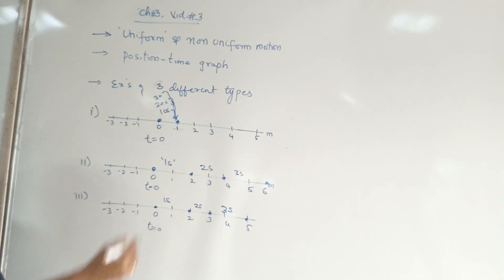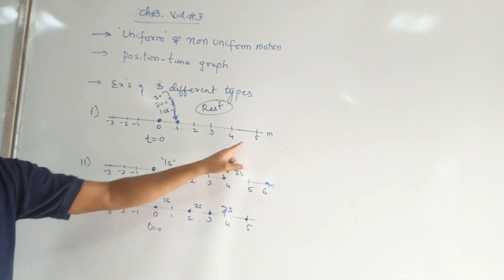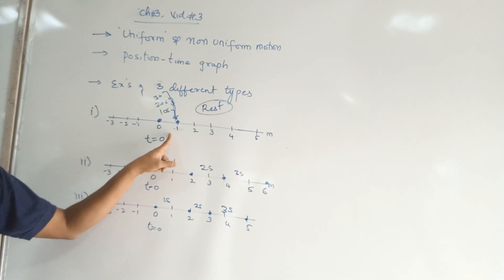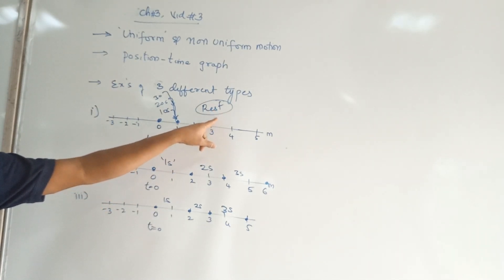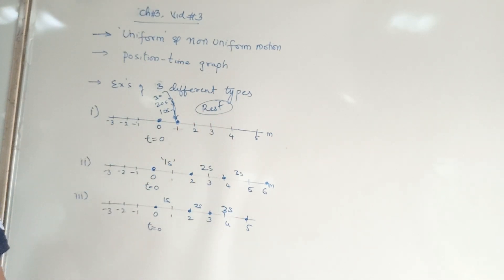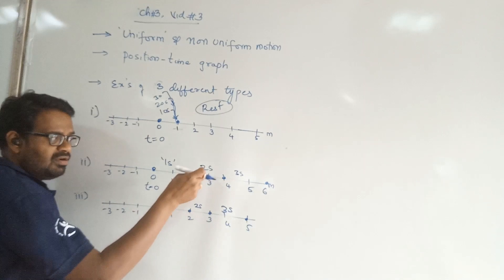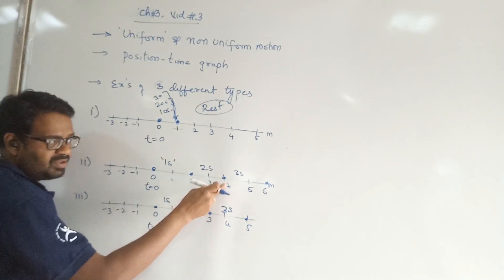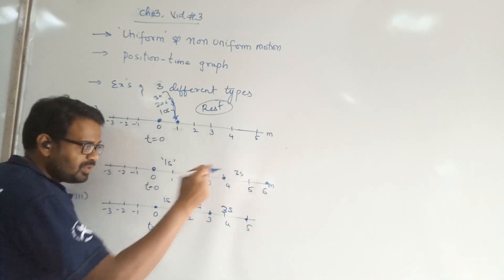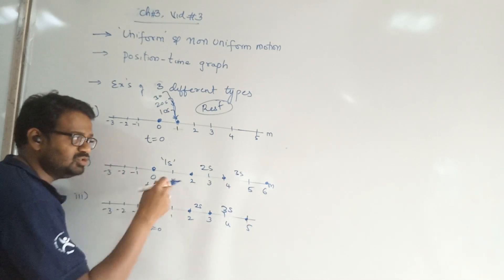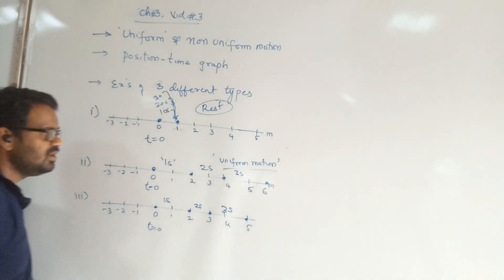In the first case, the body is not moving at all — there is no change in terms of position, which is regarded as rest position. In the second case, for each second the body has traveled 2 meters — equal changes in time intervals result in equal changes of position. This is what we call uniform velocity, or uniform motion.